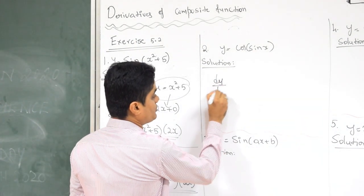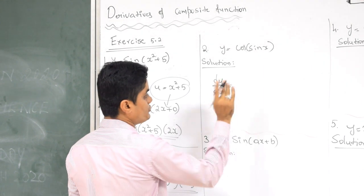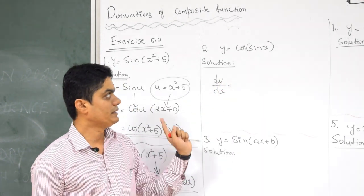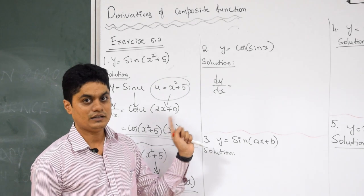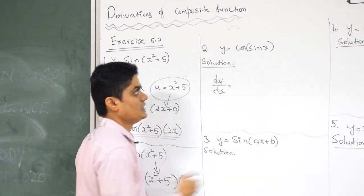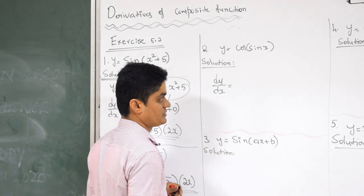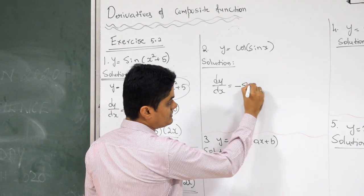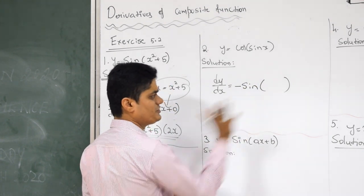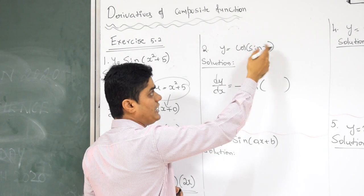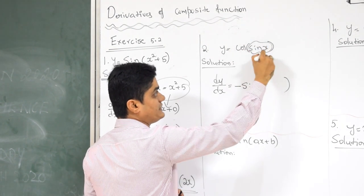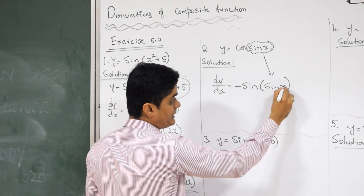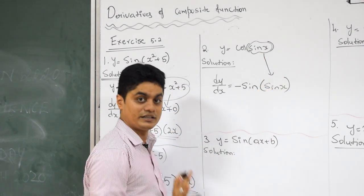Start. DY by DX equals — first you should practice. Which is the outside function? Cos. What is the differentiation of cos? Minus sine. First write like this. What do we have inside cos? It is not simple X, it is sine X. So it will come as it is — don't differentiate it, just write as it is.